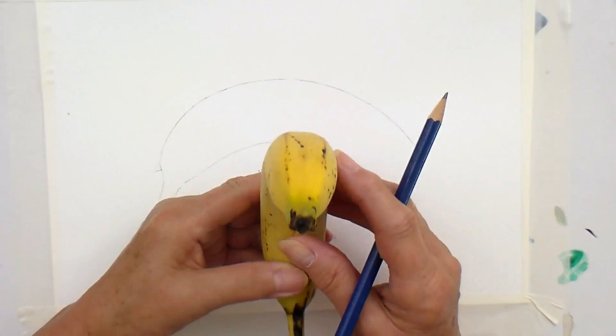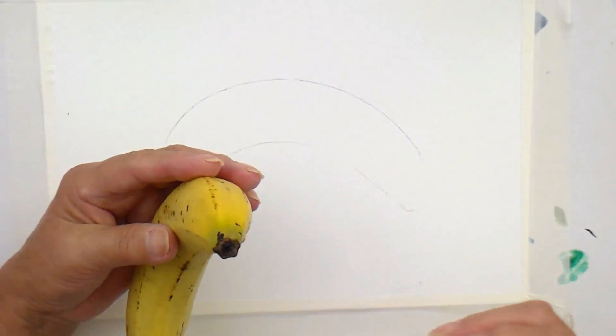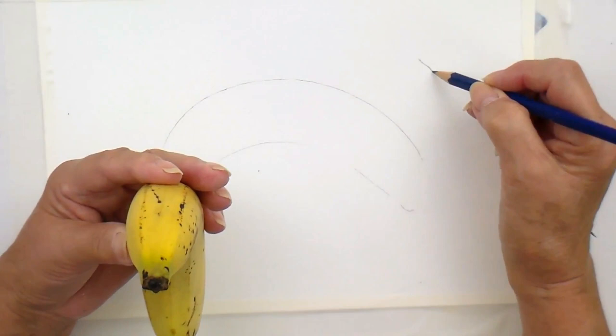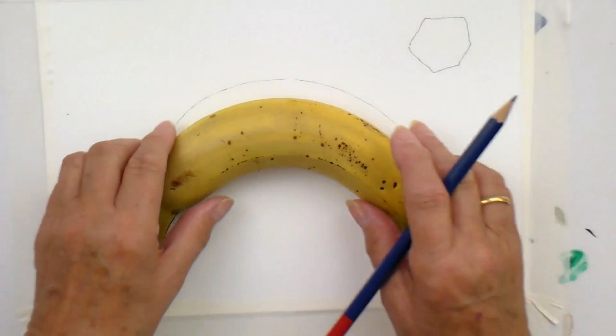Now, remember bananas, they're not round all the way. They're made of flat sections where the skin is, where it forms and peels, okay? And if you were to slice it in half, you would probably have something like that. Roughly, anyway. Okay, so there's your banana. That's the shape we're going to work to.